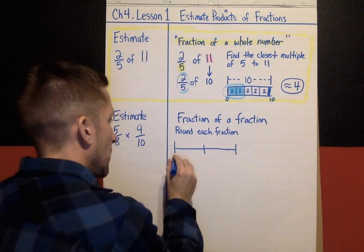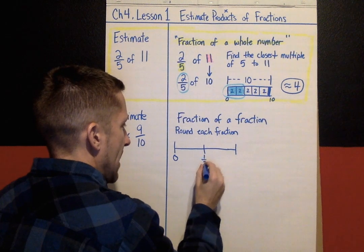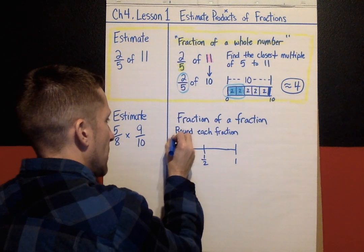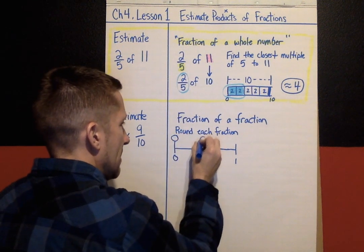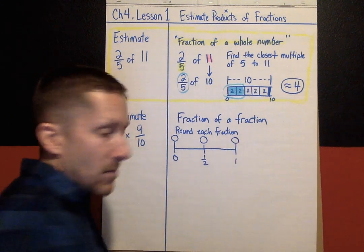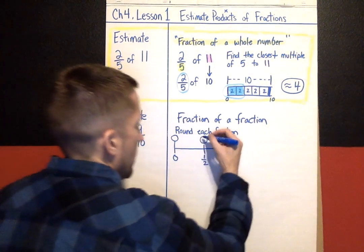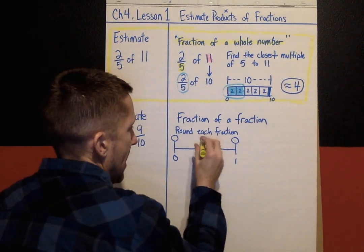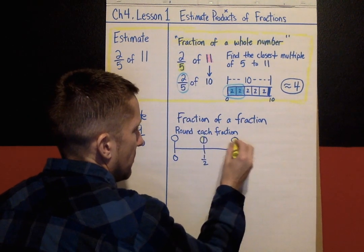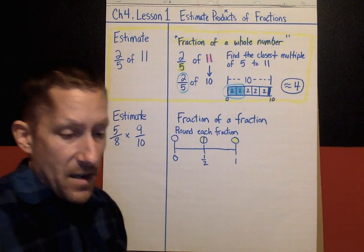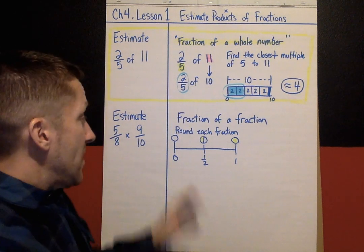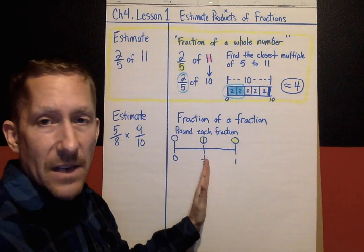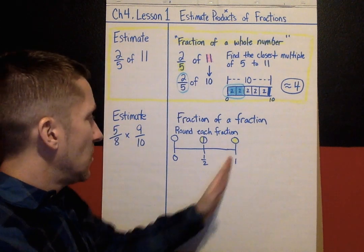You're going to round each fraction using this model: is it closest to zero, closest to a half, or closest to one? Zero would be an empty pizza, a half would be a pizza with half shaded, and a full pizza would represent one whole. So you round each fraction to either zero, a half, or one — whichever it's closest to.